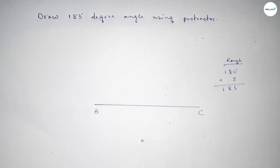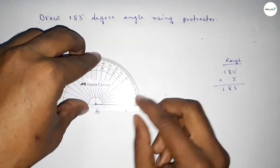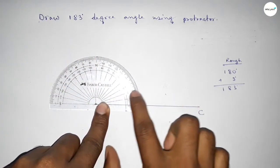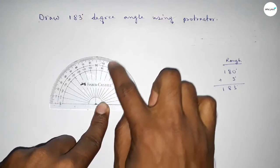Putting the protractor on the point B perfectly, then this is counting total angle. So this is 90, 100, 120, so total up to this is 180 degree.